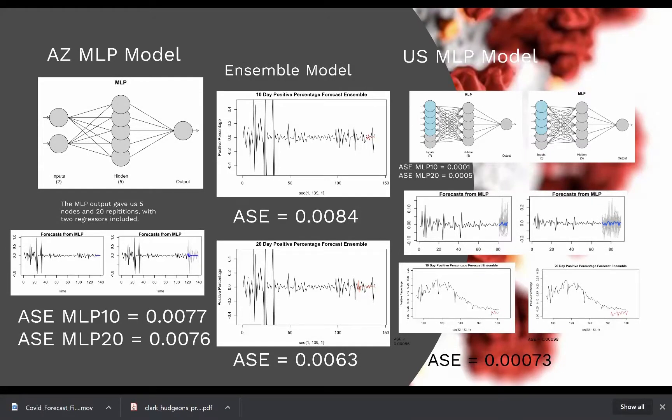And then we did the exact same method on the US data. You can see the neural network design diagrams there with the forecast both short-term and long-term and the ensemble models with the ASE calculations for the US data.